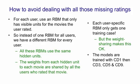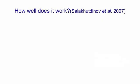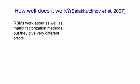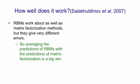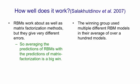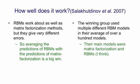The models are trained with CD1, then after a while with CD3 — that is, you go up and down three times before collecting statistics for the negative phase — then with CD5, and then with CD9. The RBMs work about as well as the matrix factorization methods, but they give very different errors. What that means is that if you average the predictions of the RBMs with the predictions of the matrix factorization methods, you get a big win. The winning group actually used multiple different RBM models and multiple different matrix factorization models in their average, and their main models were matrix factorization models and RBM models.